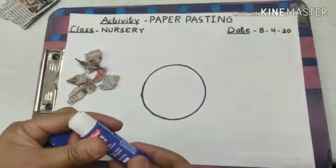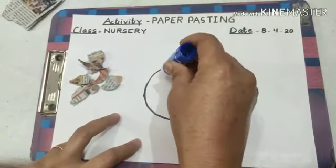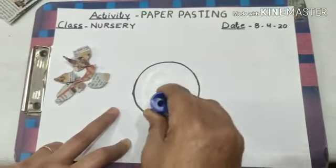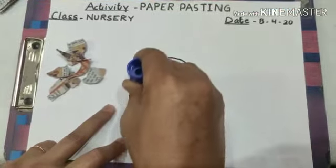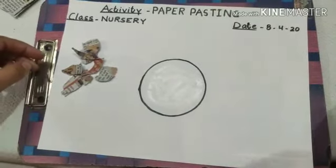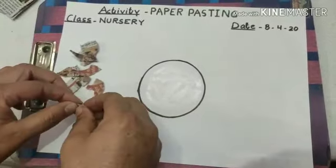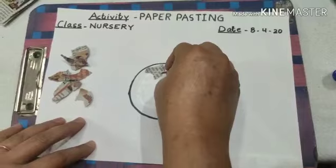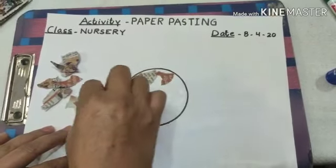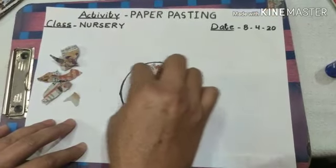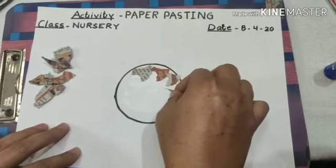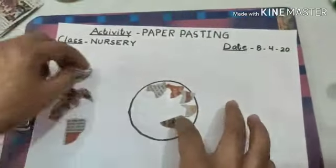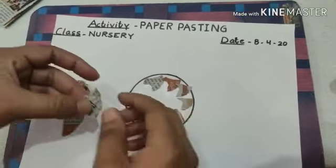Apply glue on this circle. And then paste small pieces of paper on this circle. Take one by one piece of paper and paste it on the circle.